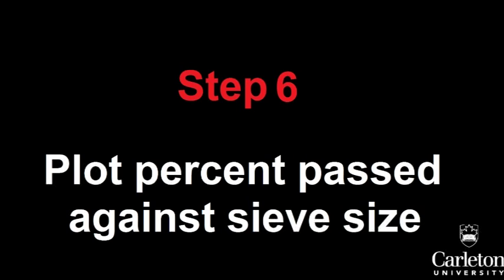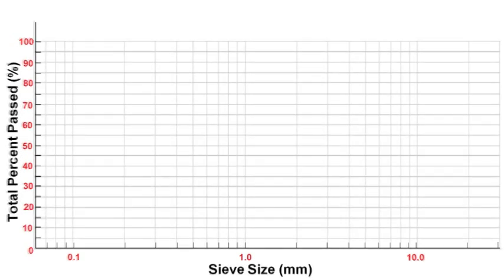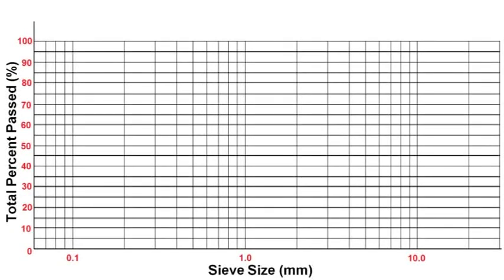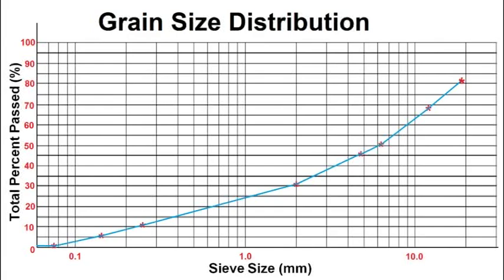Plot the percent passing each sieve versus the sieve size. This graph will use a semi-log scale. The y-axis will be a linear scale of the total cumulative percent passed from 0% to 100%. The x-axis is sieve size in millimeters, on a logarithmic scale from the smallest sieve size corresponding to the number 200 sieve, or 0.075 millimeters, to the largest sieve size, which was three-quarter inch, or 19 millimeters. Each sieve will correspond to one data point on this graph. Plot all the data points and connect them together like this. We now have a grain size distribution curve for our soil sample. This concludes the sieve analysis lab.